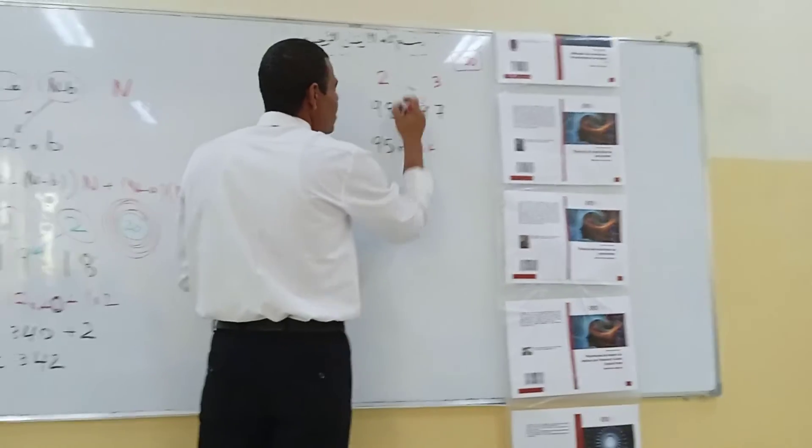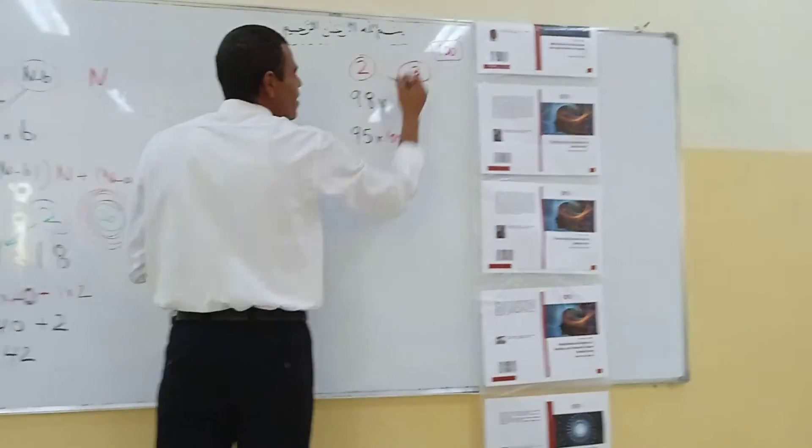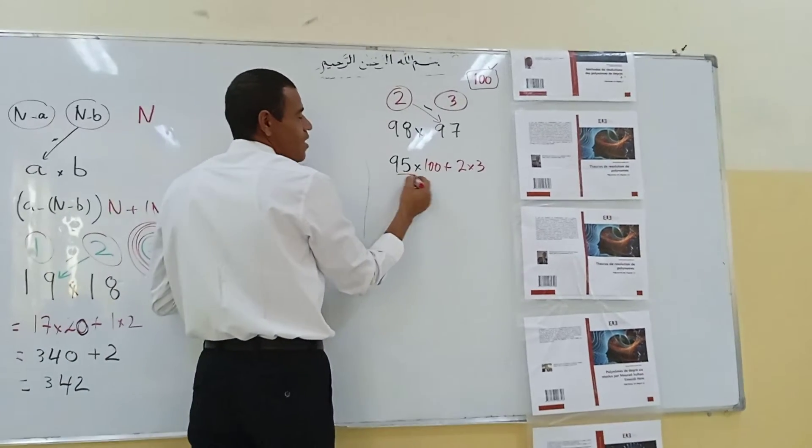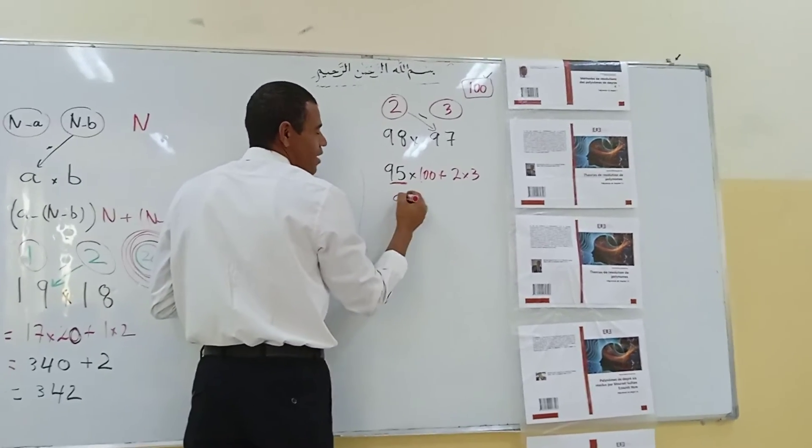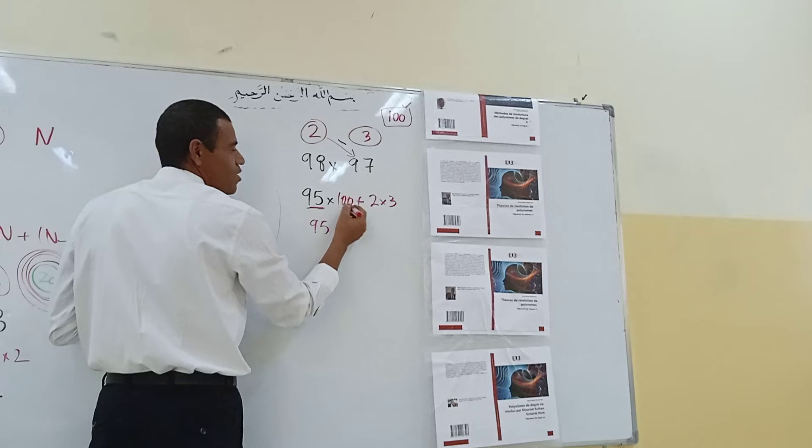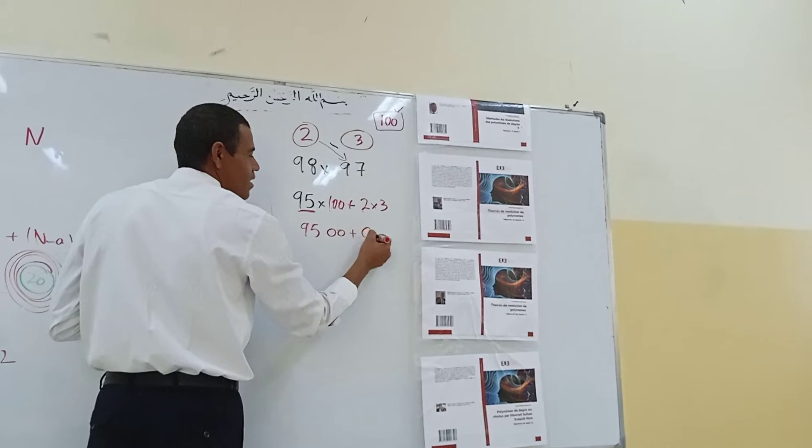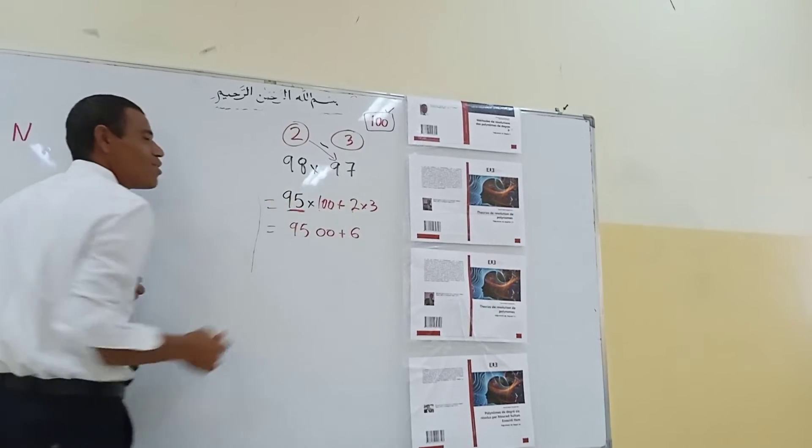Plus 2 multiplied by 3. This is 95 multiply by 1 is 95. Then annex how many zeros? 2. Plus 2 into 3 is 6. The last answer is what number? 9506.